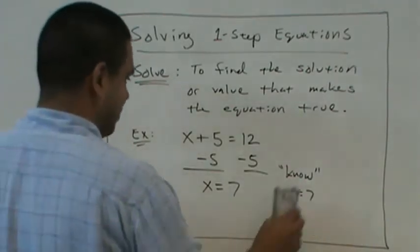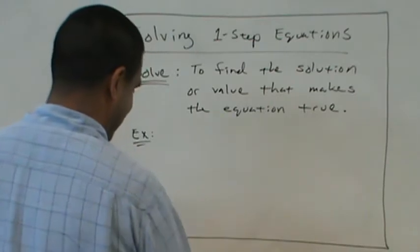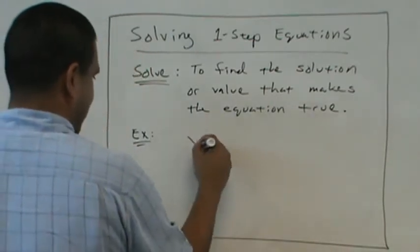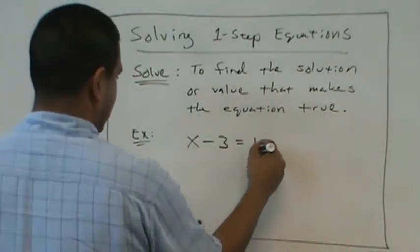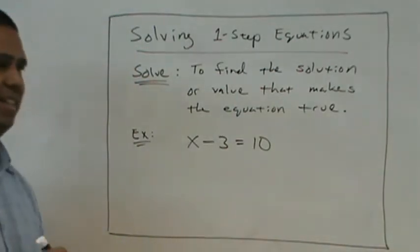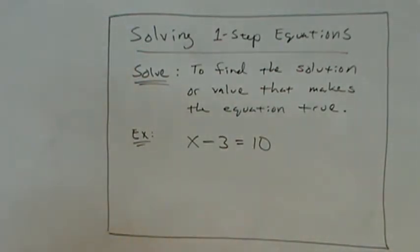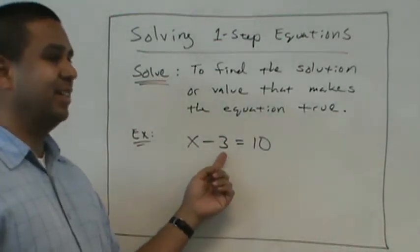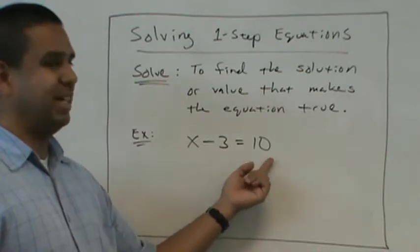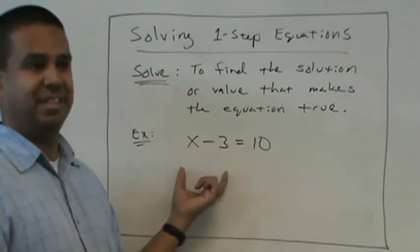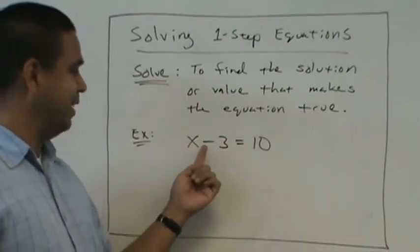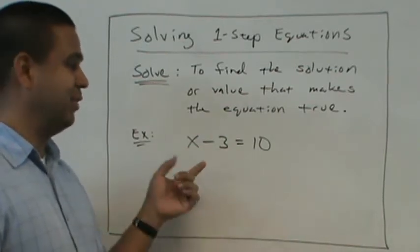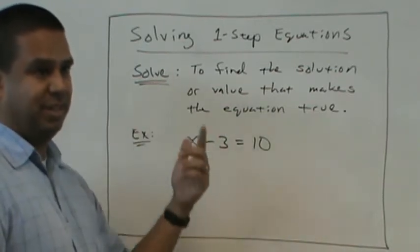No. Good. What if it was subtraction? What if I had x minus 3 equals 10? Someone said 7. So if I put 7, what's 7 minus 3? No. 4. 4 equals 10. So it's not 7. 13, right? It would be 13. So if you're trying to solve these in your head mentally, be careful.